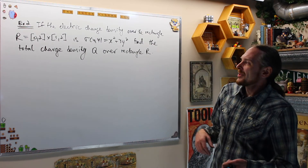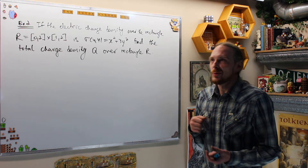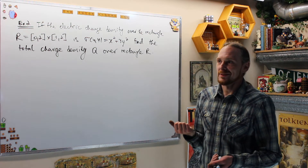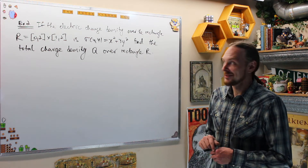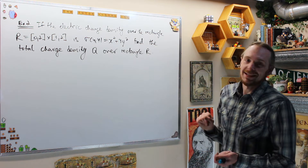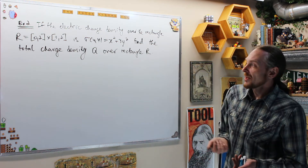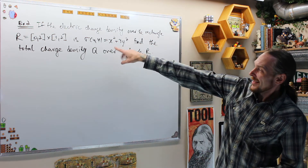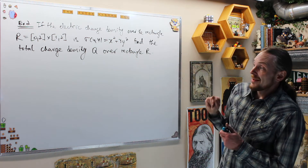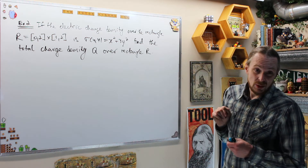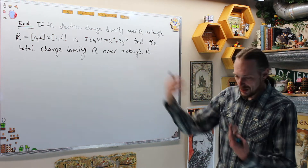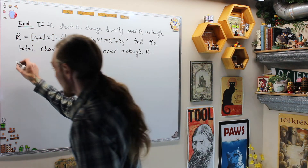Example 2: we're going to do charge density — which is much cooler than regular mass density. If I have an electric charge density over a rectangle [0,2] × [1,2] and it's given by σ = x² + 3y², then we want to know what the total charge Q is over that rectangle. As usual I set up and draw my planar region — this time it's a nice regular rectangle.